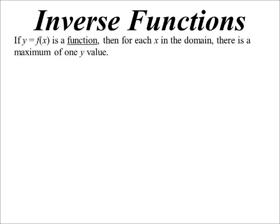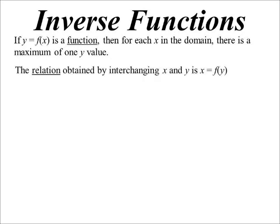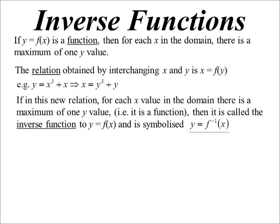Now if we swap the x and the y around, so instead of y equals f(x) it becomes x equals f(y), at this stage it's just a relation. So for example, if our original function is y equals x cubed plus x, its inverse relation would be x equals y cubed plus y. The question is whether or not that is an inverse function — it's an inverse relation once we swap x and y, but it won't be an inverse function unless the new thing satisfies all the rules for a function.